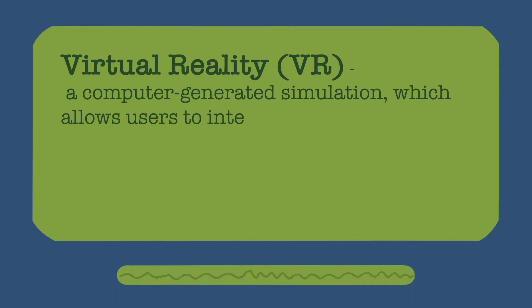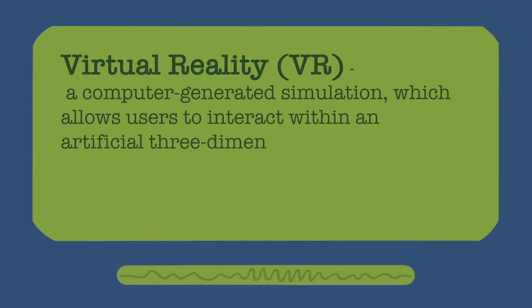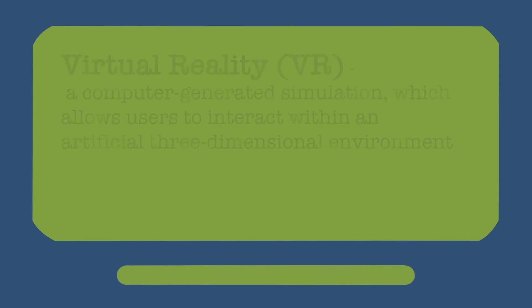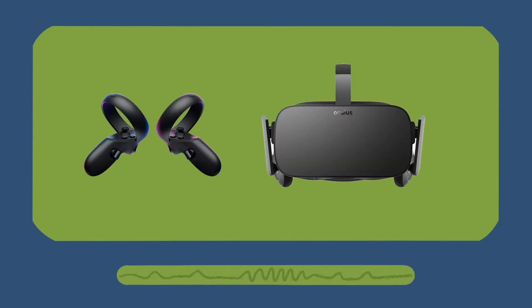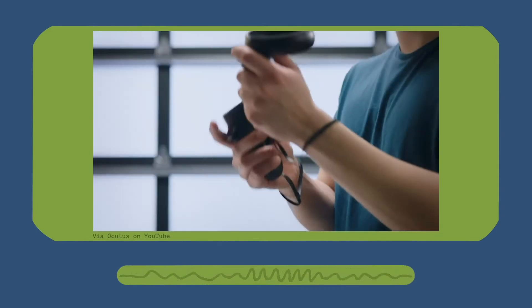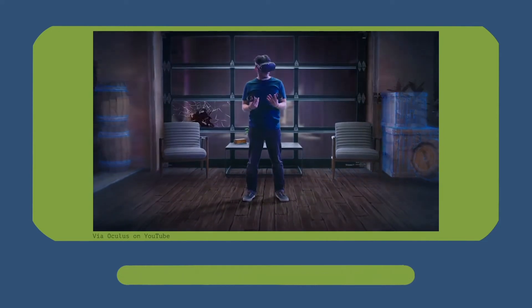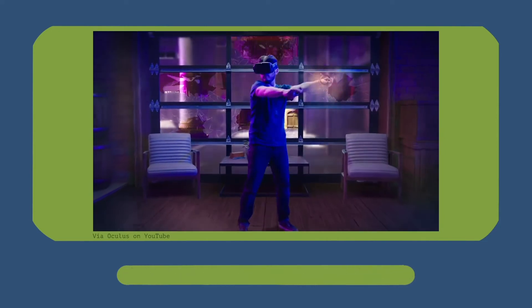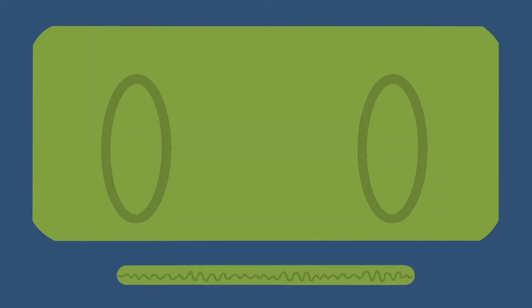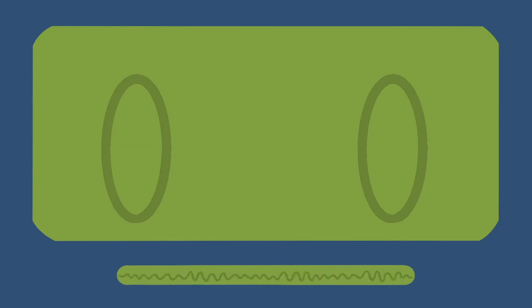The other component of XR is VR. Virtual reality, or VR, refers to a computer-generated simulation which allows users to interact within an artificial three-dimensional environment. The most apparent example of VR is in the form of a headset, such as the Oculus Quest. The Oculus Quest takes your actions and inputs and translates them into a digital space, such as a video game or other simulated environment.